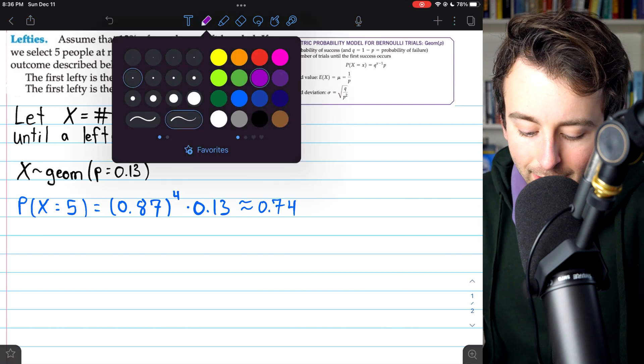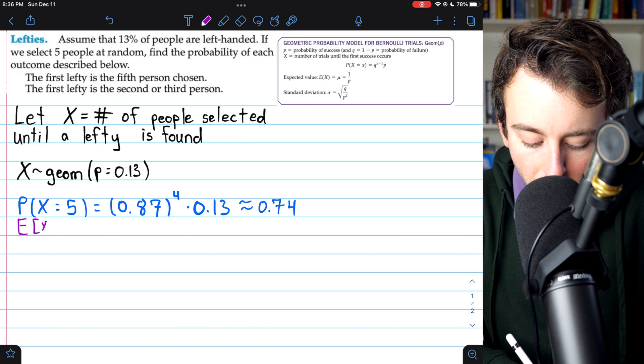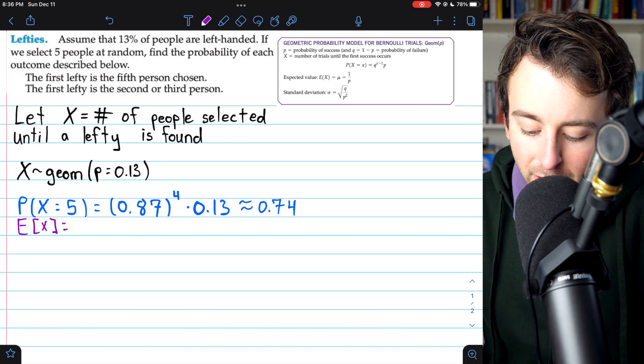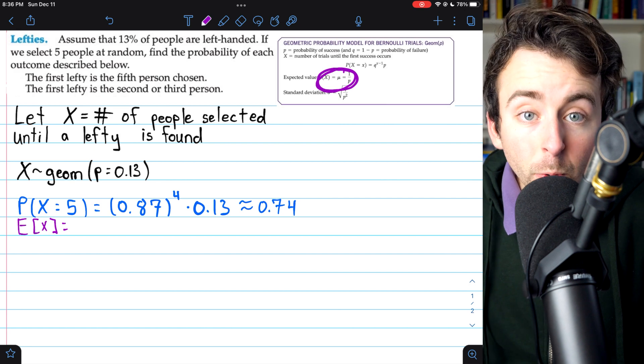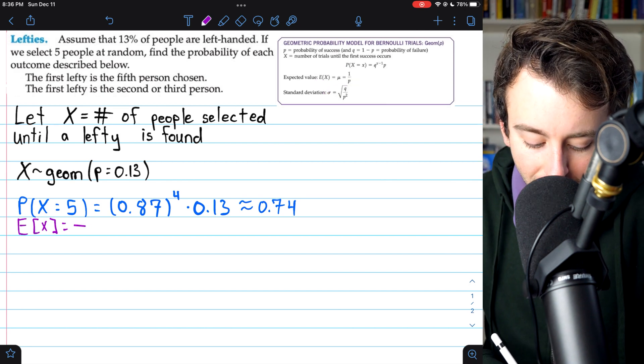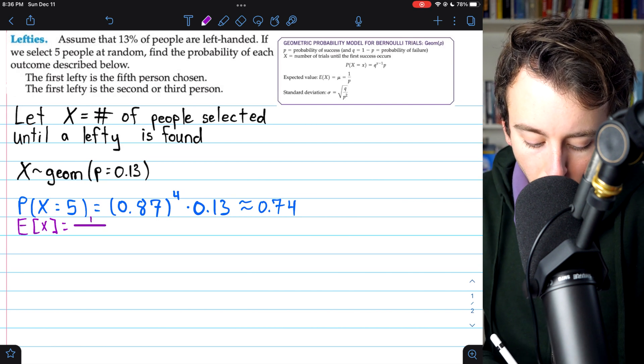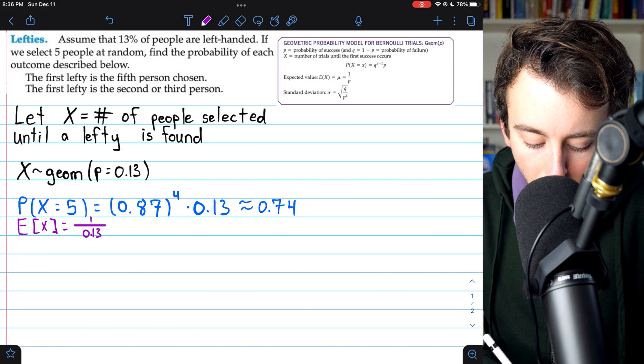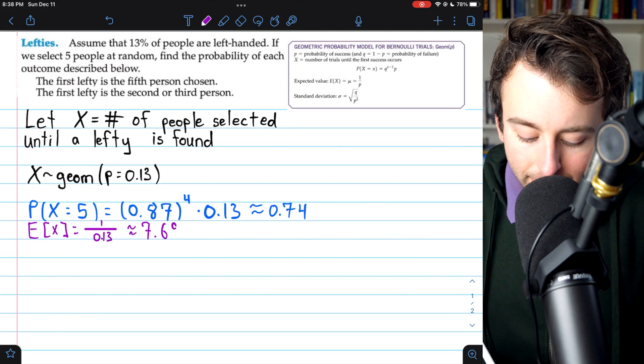Let's go ahead and calculate the expected value and the standard deviation of our geometric random variable. The expected value of a geometric random variable is the reciprocal of p, the reciprocal of the probability of success. So in this case, that's going to be 1 over, or 1 divided by, 0.13. And this is about 7.69.